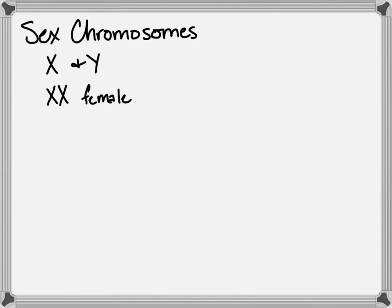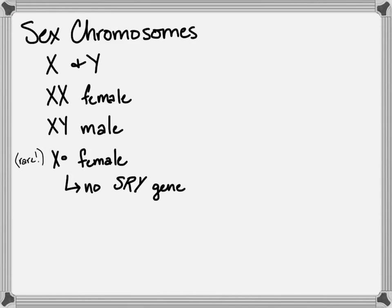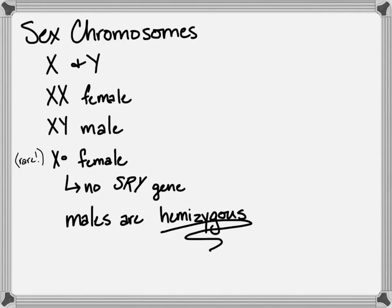In flies and humans, XX is female and XY is male. It is possible, but rare, for a monosomy to occur, meaning one gamete has one X and the other gamete has no sex chromosome to donate to the offspring. That makes you female if you're human, because you lack the sex-determining region of the Y — the SRY gene. The protein created by the SRY gene inhibits the action of another protein through a chain reaction. Because males only inherit one copy of the X and one copy of the Y, we say they are hemizygous — not heterozygous, not homozygous, because they only get one copy.